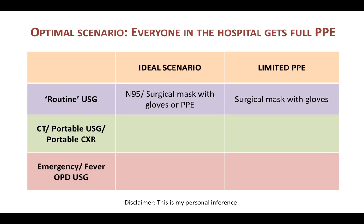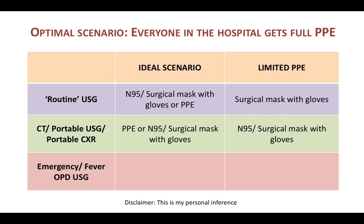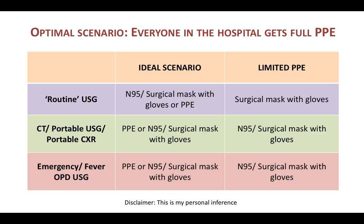For a routine ultrasound: hospitals should ideally segregate ultrasounds into routine and fever categories. For routine ultrasound, at least an N95 or surgical mask with gloves and PPE if available; if PPE is limited, a surgical mask with gloves should be safe. For CT, portable ultrasound, or portable X-ray: ideally full PPE, or N95/surgical mask with gloves; if PPE is in shortage, an N95 or surgical mask with gloves should be fine. For emergency or fever OPD cases: try to get full PPE first; if not available, at least N95 with gloves; if that's not available, a surgical mask — which, as discussed, is not inferior to N95 based on any studies.